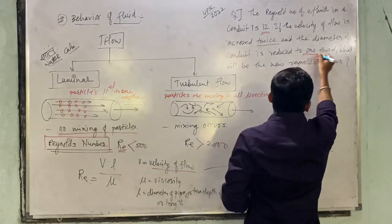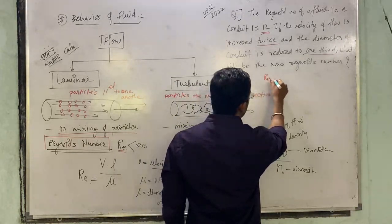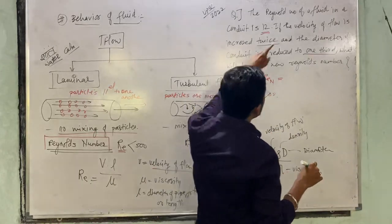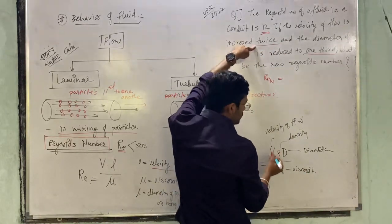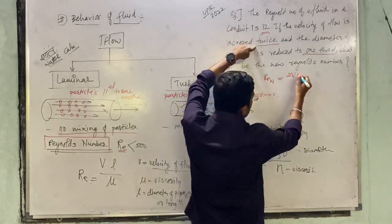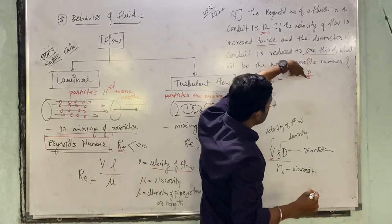Your Reynolds number is already given. Now velocity of the flow is increased twice, so velocity becomes 2V. Diameter of the pipe is reduced to one-third, so D becomes D/3.